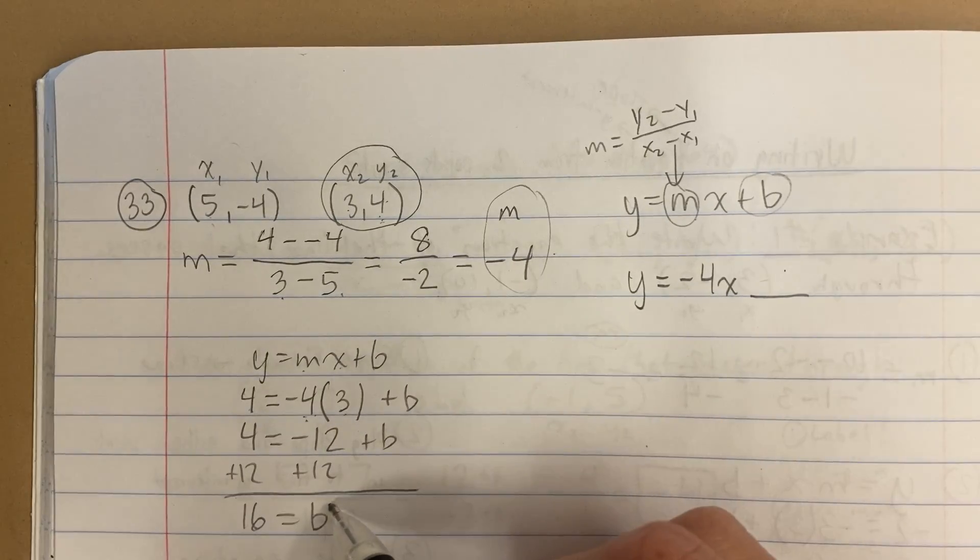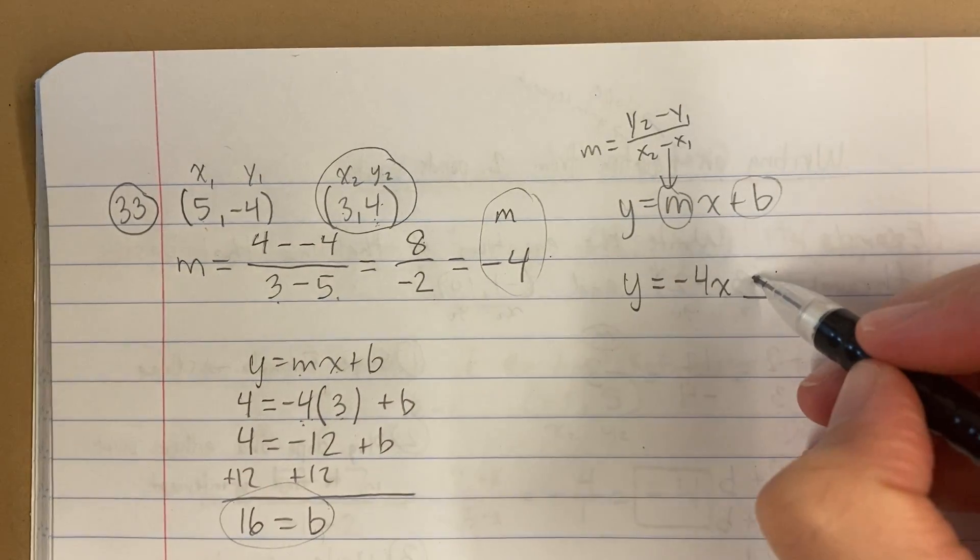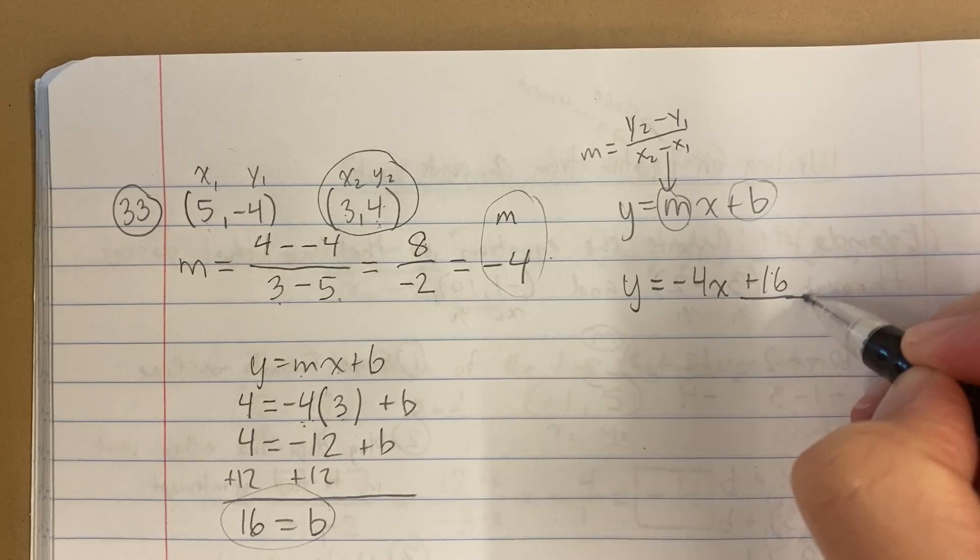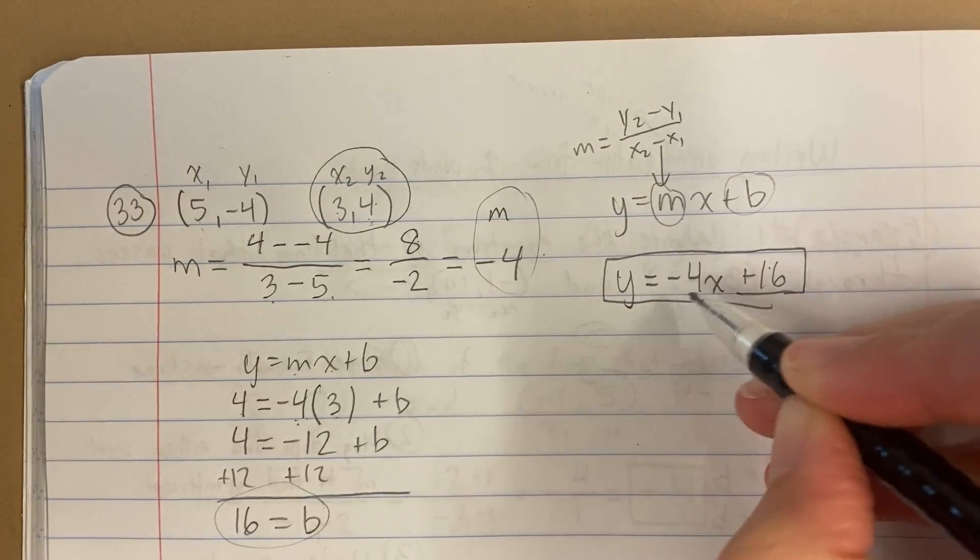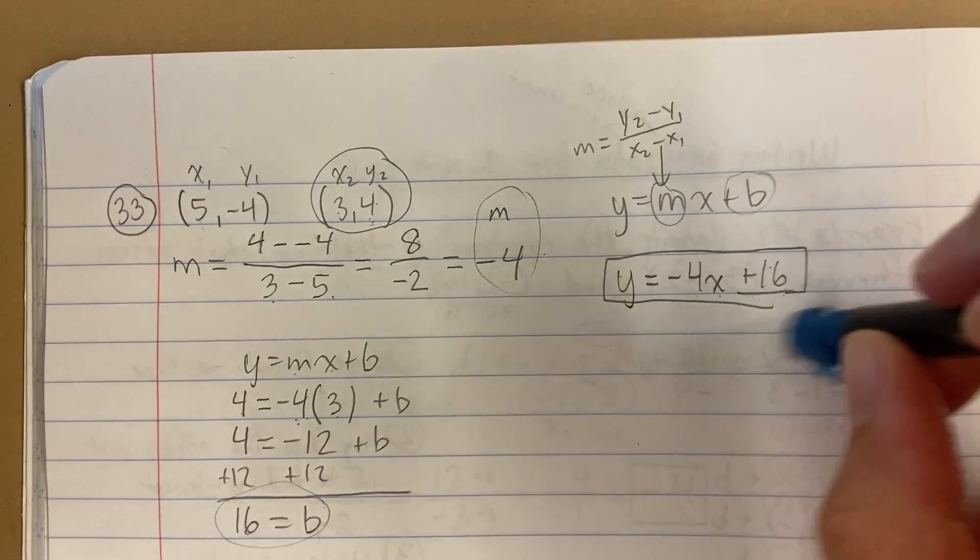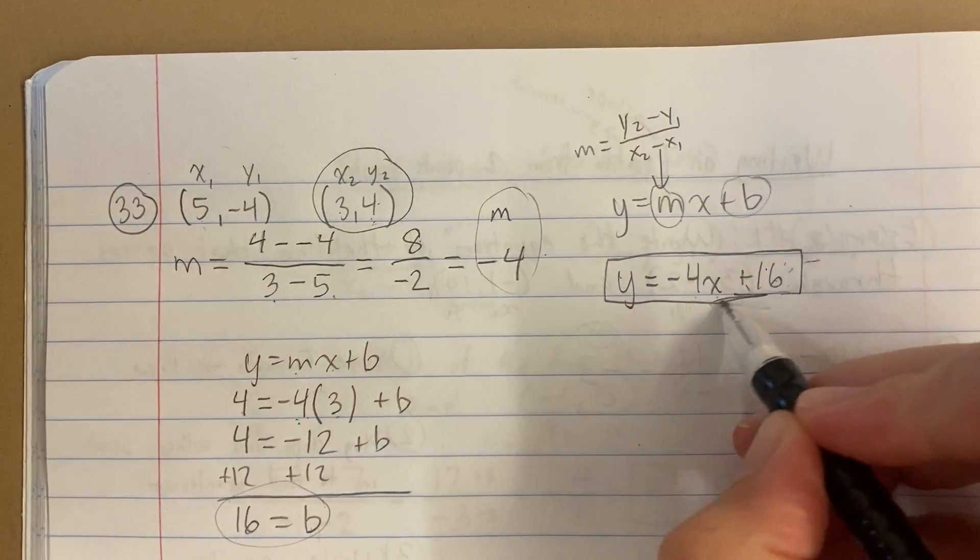So now I already have my m, and here's my b. So here's my equation: y equals negative 4x plus 16.